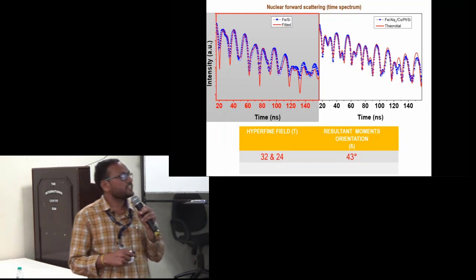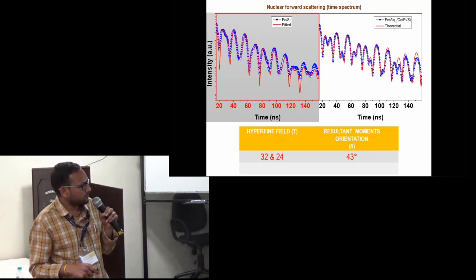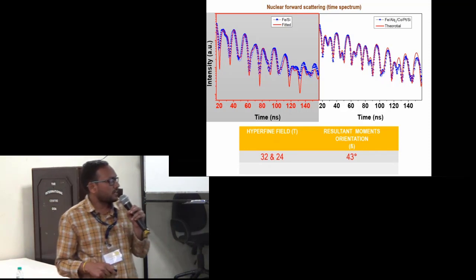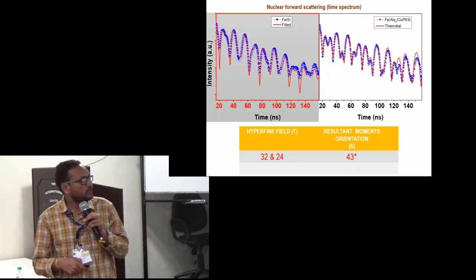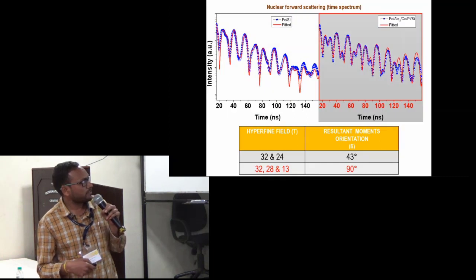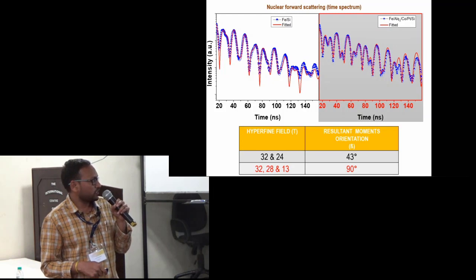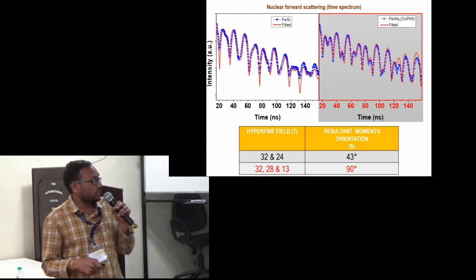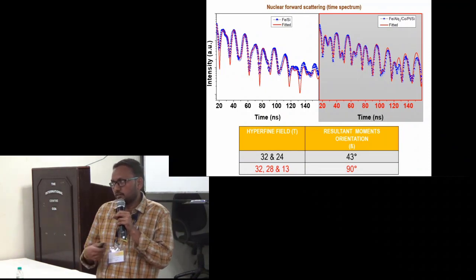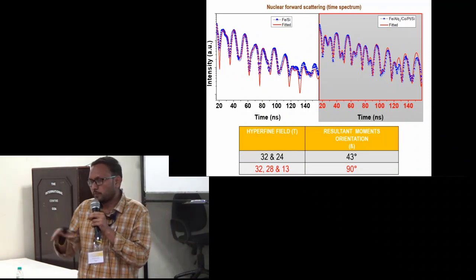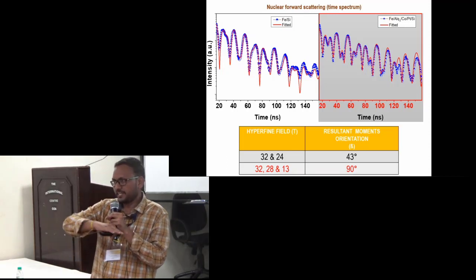This is the time spectra corresponding to Fe deposited on silicon. Here we get the hyperfine field of 32 tesla which is near to bulk, and the moment orientation at 43 or 47 degrees out of plane of the film. Whereas in case of Fe deposited on my polymers, we get reduced hyperfine field up to 28 and 13 tesla. The interesting thing is the moment orientation is in plane of the film, due to the soft nature of polymer. The Fe spin moments relax in the plane of the film.